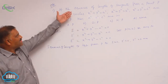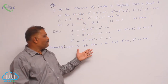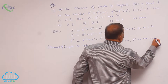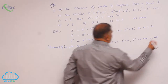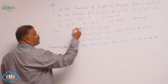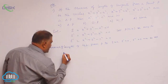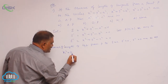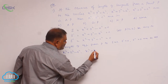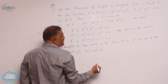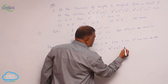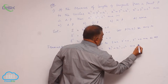It is given that the squares of lengths of tangents from point P are in AP. The square of the length of tangent is S₁₁, so the three values are: x₁² + y₁² − a², x₁² + y₁² − b², and x₁² + y₁² − c², which are in AP.